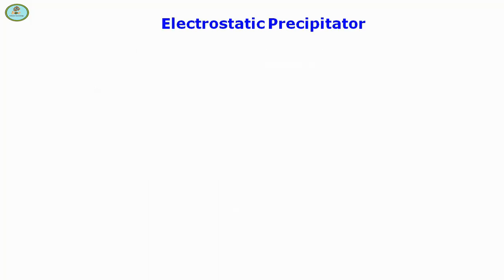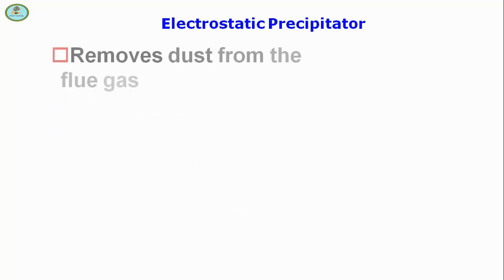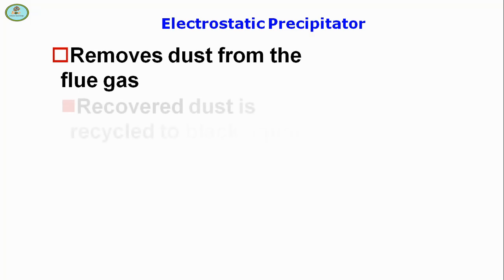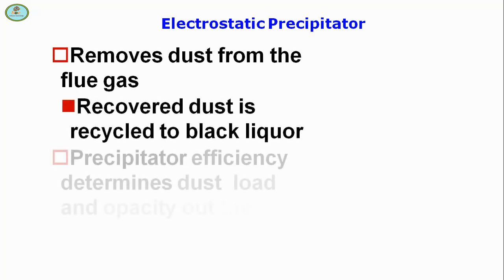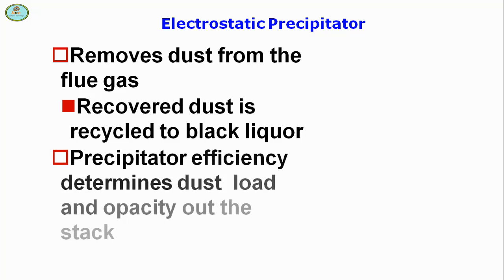Electrostatic precipitators remove dust from the flue gas. Recovered dust is recycled to the black liquor being fired. Precipitator efficiency determines the dust load and opacity at the stack.